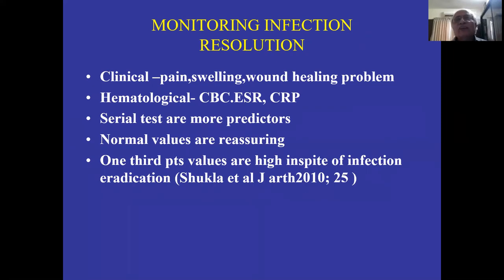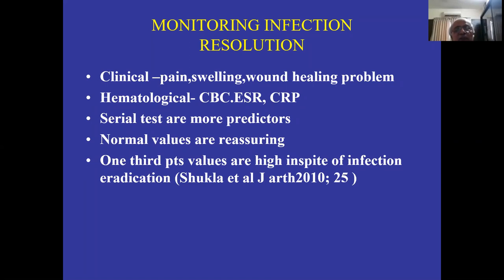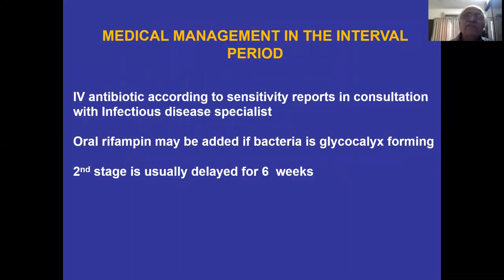For monitoring infection resolution: clinical pain, swelling, wound healing. Hematology serial tests are predictive — not one test alone; it has to be serial. Normal values are reassuring. One third of patients have elevated values in spite of infection being cleared. Oral rifampicin has been added for biofilm-forming bacteria — one additional new thing from the last two to three years. The second stage is usually delayed for six weeks minimum.